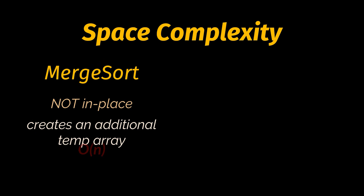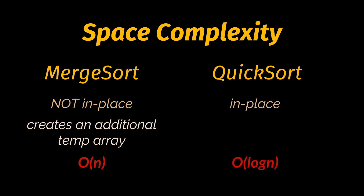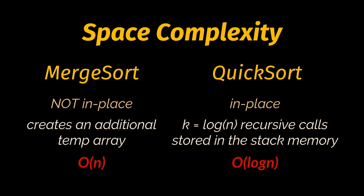Regarding space complexity: merge sort is not an in-place algorithm — it creates an additional temporary array to hold items, so its additional space complexity is O(n). Quick sort is an in-place algorithm, but its space complexity is O(log n). This comes from the log n partitioning steps: each partition implies a new recursive call to quick sort, and these recursive calls occupy space in the stack memory until sorting is complete.